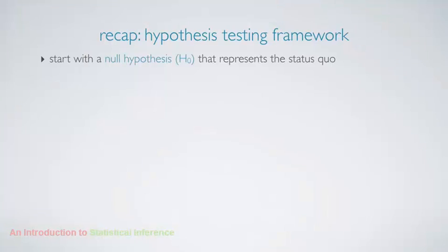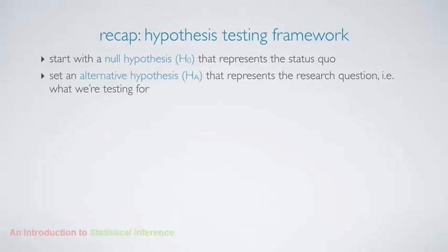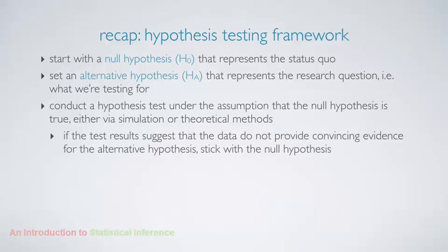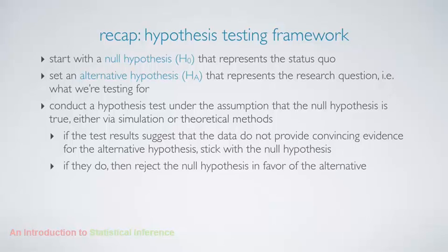So to recap, we start with a null hypothesis that represents the status quo. We also have an alternative hypothesis that represents our research question — in other words, what we're testing for. We conduct a hypothesis test under the assumption that the null hypothesis is true, either via simulation or using theoretical methods. If the test results suggest that the data do not provide convincing evidence for the alternative hypothesis, we stick with the null hypothesis. If they do, then we reject the null hypothesis in favour of the alternative.